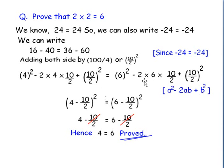Similarly, on RHS, 36 can be written as 6 square. Minus 60 can be written as minus 2 into 6 into 10 by 2, and adding 10 by 2 whole square to this side as well.